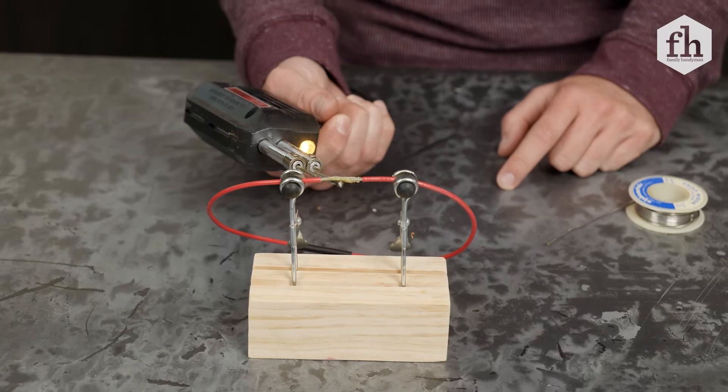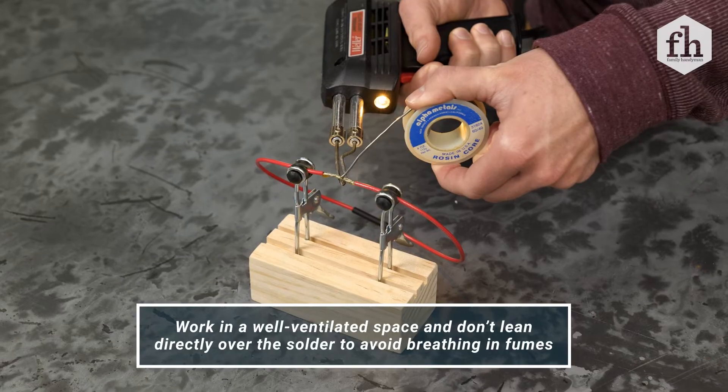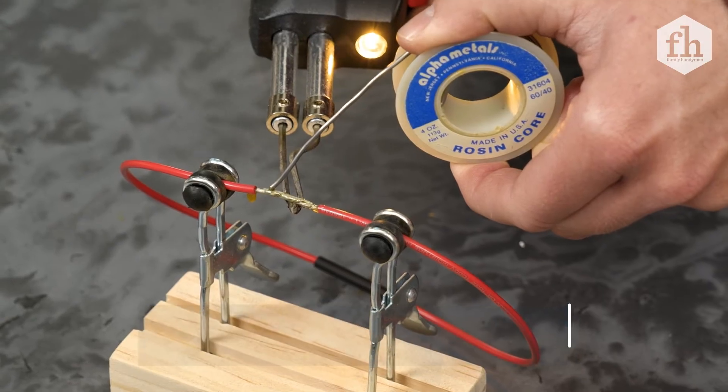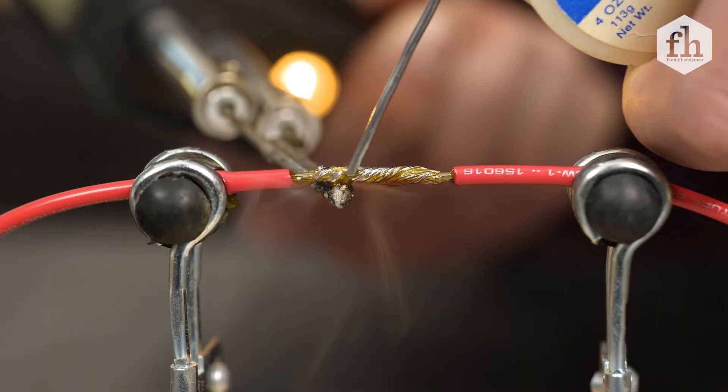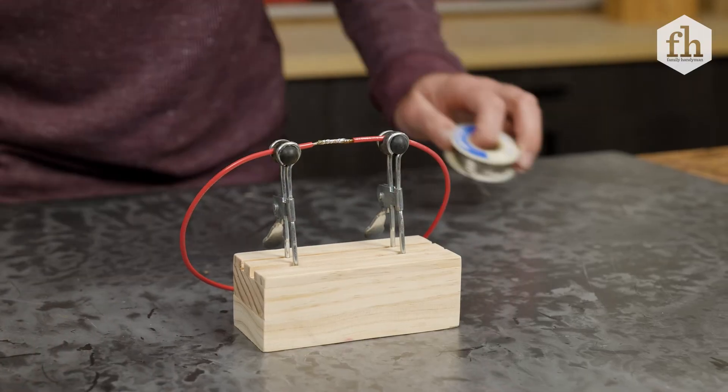Begin heating the wires by placing the solder gun underneath the wires. Apply solder above wire so the solder is fed to the top and not the bottom. Allow solder to completely coat over the exposed wires, then remove the heat and solder.